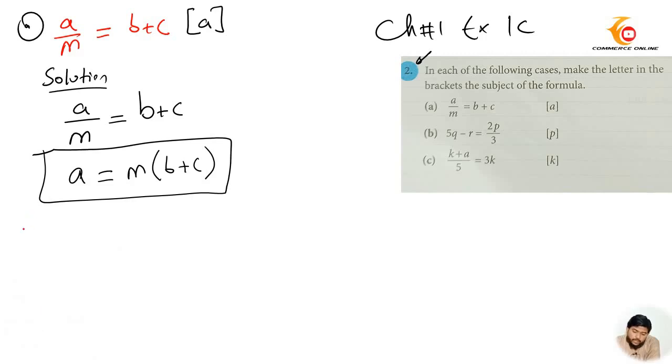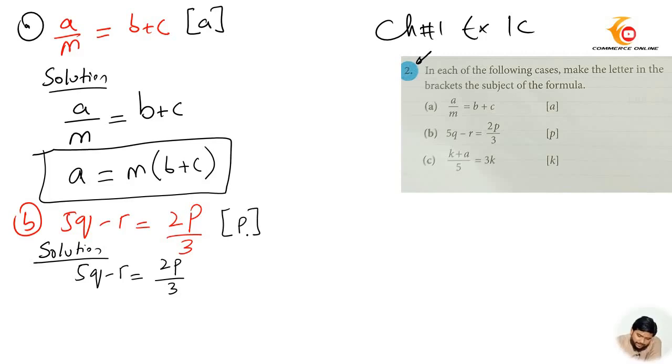Now let's move to question number B which is 5Q minus R equals to 2P upon 3. First I will write solution, par hum question ko utar denge, jaysa question diya hua hai. 5Q minus R equals to 2P upon 3. Here I need to find out the value of P.